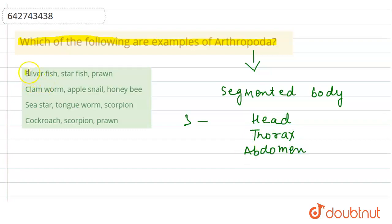Looking at the options, silverfish, starfish, and prawn are not examples of arthropods because if we see the starfish, does it look like a segmented body? No. The second option has clam worm, apple snail, and honeybee - they are also not part of arthropoda.